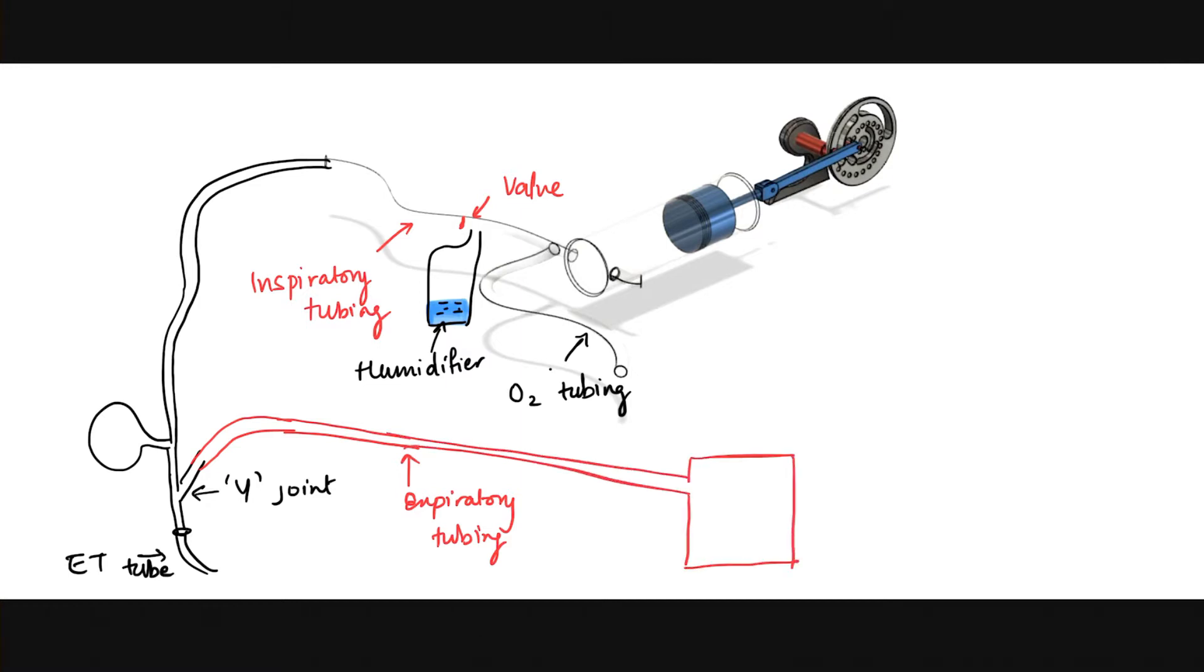The expired air from the patient will get in the expiratory tube, and because of the valve near the Y-joint, it will travel to get contained by a UV-laden container which is meant to eliminate the COVID-19 virus from the expired air of the patient. This will in turn decrease the risk of COVID-19 infection amongst healthcare professionals.